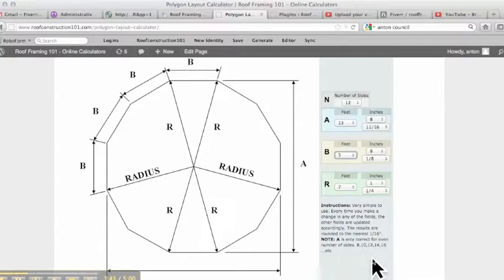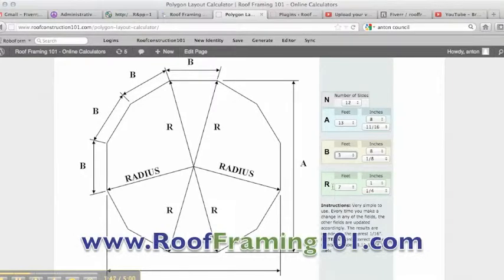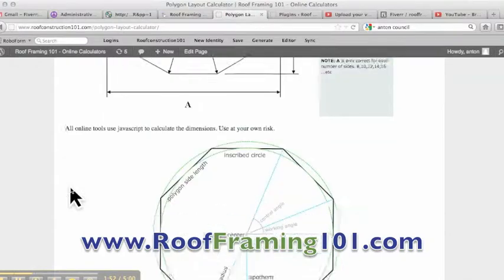So if you're going to do a polygon with 11 sides, then A would not necessarily be correct, but you'll still get the radius and you'll still get the length of sides. So you can still do your polygon, it just won't work the other way.